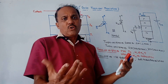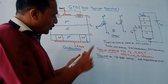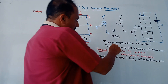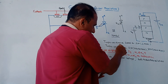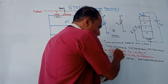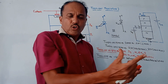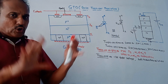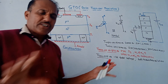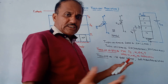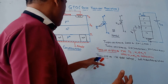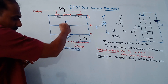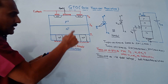From an exam point of view, questions on GTO may be like: explain the turning on and turning off process of the GTO, or draw and explain the switching characteristics of GTO. Now let us look at the construction details of GTO.